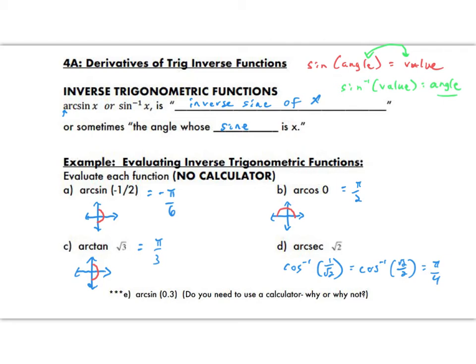The answer to that question is yes, because we don't know what the value, the exact value is for 0.3. What angle produces exactly 0.3 as a sine? So calculator, definitely helpful in that situation.